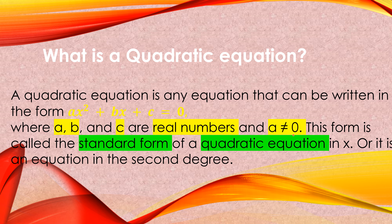Why should A not be equal to 0? Because if A will be 0, remember that any number multiplied by 0 will give us 0, and this will no longer be a quadratic equation. So this form is called the standard form — this is already on its standard form.